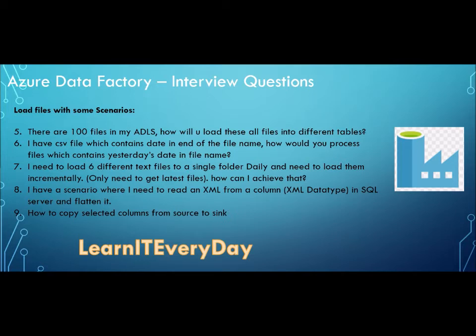I have a scenario where I need to read XML from a column. This is a bit complex. If your SQL column is of XML type, it is not straightforward to dump it into a different destination table. You will need an intermediate step: read the XML, create a storage account file, then take that file as your source and flatten it. Since at the source it is just one column and not a complete file, first convert that column into a file and then use that file as a source.